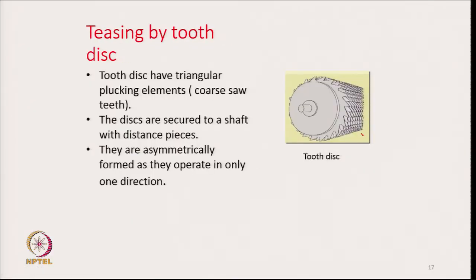Teasing by tooth disk: tooth disks have triangular plucking elements. The disks are secured to a shaft with distance pieces and are asymmetrically formed, as they operate in one direction — inclined in one direction, performing teasing action. There are a large number of disks placed one after another, inclined in the same direction. They also resemble saw teeth and are very effective when dealing with very small size tufts.